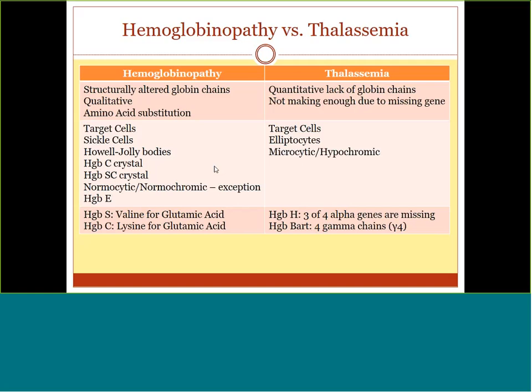Two unique thalassemia variants: hemoglobin H results when three out of four alpha genes are missing. Hemoglobin BART is when all four alpha genes are missing — you can't make alpha at all, so gamma chains precipitate together to make four gamma chains, which is hemoglobin BART. In that severe alpha thalassemia with all four genes gone, the fetus usually dies by the third trimester because hemoglobin BART doesn't carry or deliver oxygen properly.